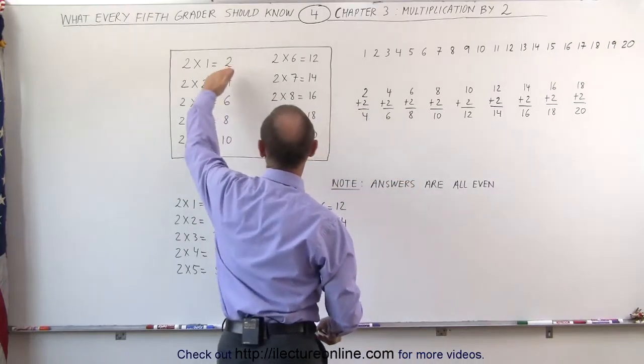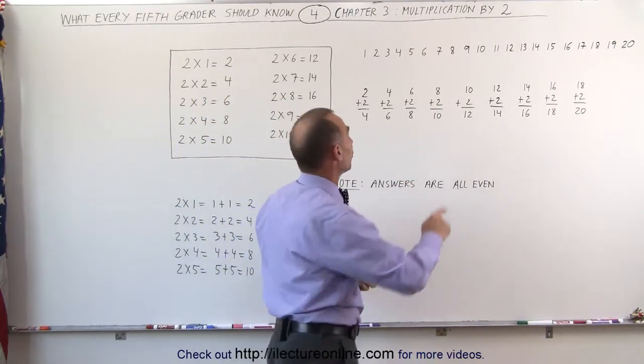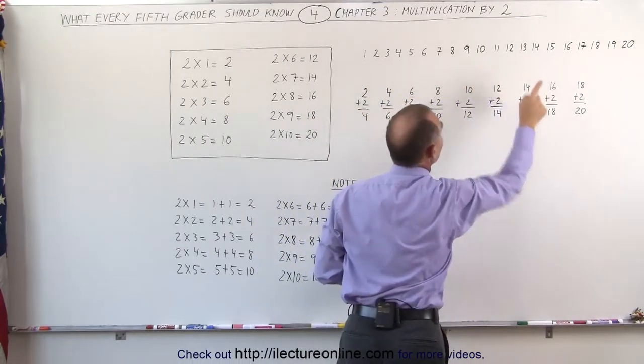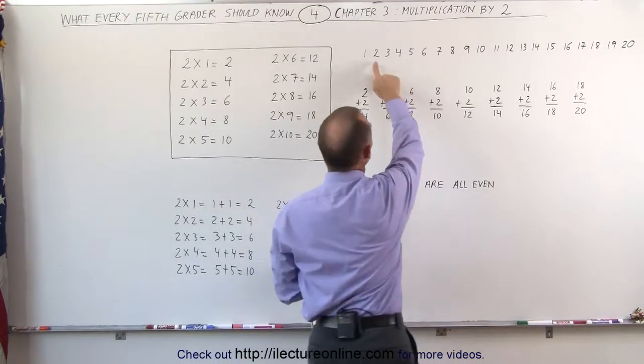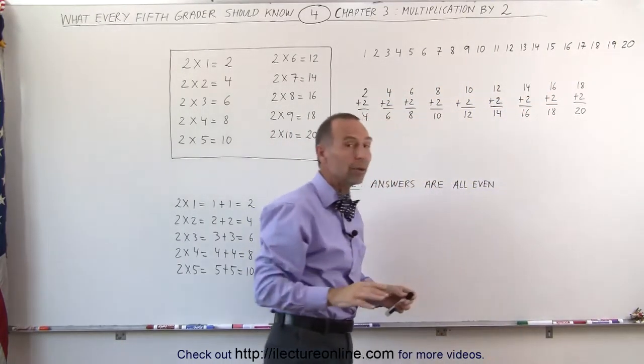Notice that the answer in each case is the second number, the even numbers. Notice that the numbers 1, 3, 5, 7, 9, 11, 13, and so forth, those are odd numbers. And the numbers 2, 4, 6, 8, 10, 12, 14, and so forth, those are even numbers.